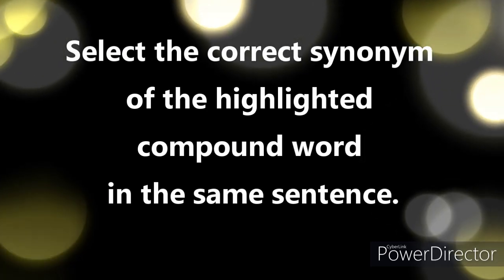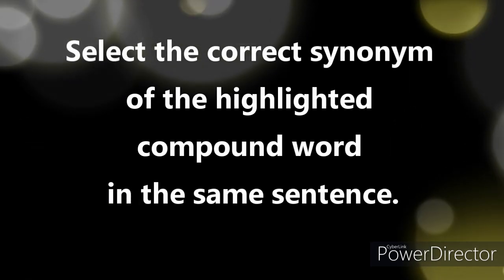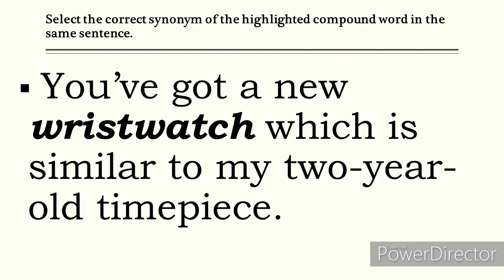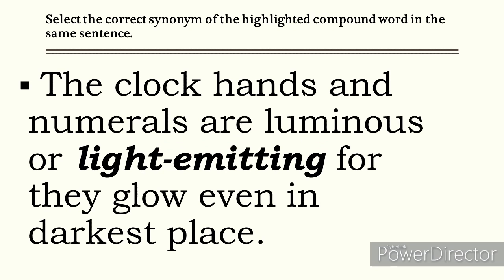Let us try another activity using context clues. Select the correct synonym of the highlighted compound word in the same sentence. The first sentence: 'You've got a new wristwatch, which is similar to my two-year-old timepiece.' The synonym of wristwatch is timepiece. The second sentence: 'The clock hands and numerals are luminous or light-emitting, for they glow even in the darkest place.' The synonym of light-emitting is luminous.